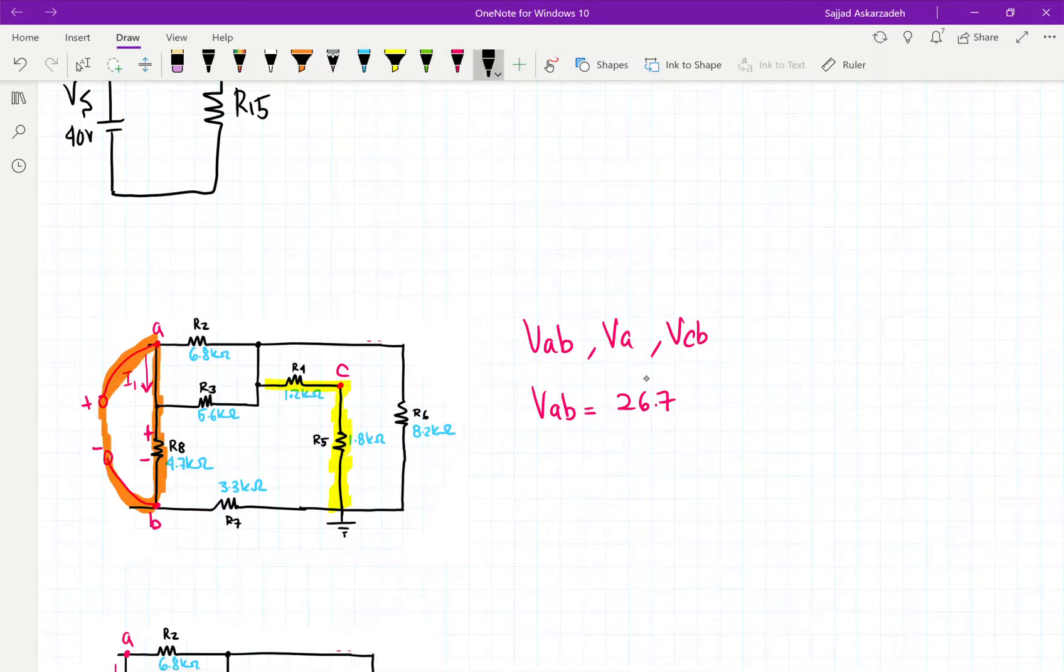So as we go around, we're first going to hit VR8 first, and then minus VAB equal to 0.